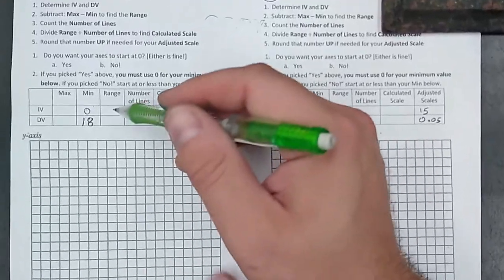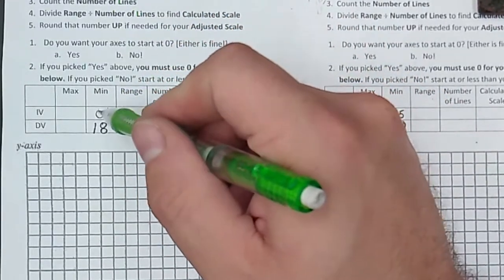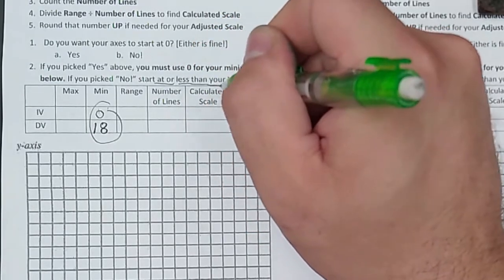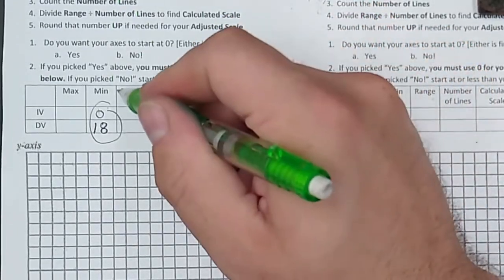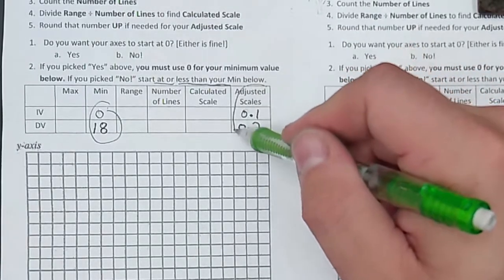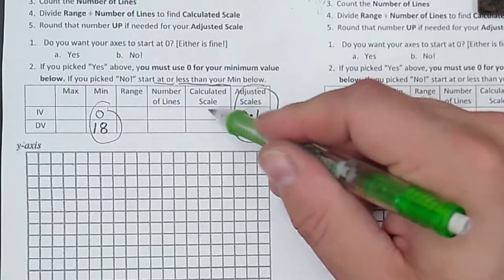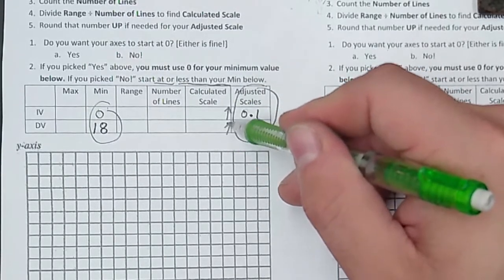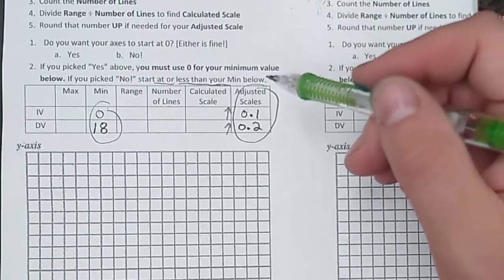The whole point of filling out these training wheels here is whatever you get for the minimum, you're going to start at or just slightly less than whatever you get for the minimum. The other thing that we want to keep in mind is that the adjusted scale is what we're going to count by. So whatever we get here for calculated scale, you round it up, and that gives us a good adjusted scale.